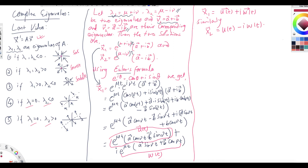We want to know whether u(t) and w(t) are individually solutions. The Wronskian of x1 and x2 is non-zero, so x1 and x2 are fundamental solutions. Since x1 is a solution, we can write x1' − A·x1 = 0, which means u' + i·w' − A(u + iw) = 0, giving (u' − Au) + i(w' − Aw) = 0.